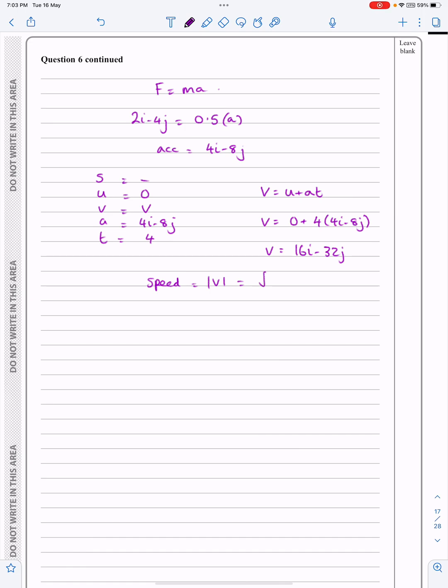So that's going to be the square root of 16 squared plus 32 squared. I don't bother about the fact it's a minus. We're squaring it anyway. So it's always going to work out to be the same thing. That works out to be 16 root 5 or if you prefer 36 meters per second.